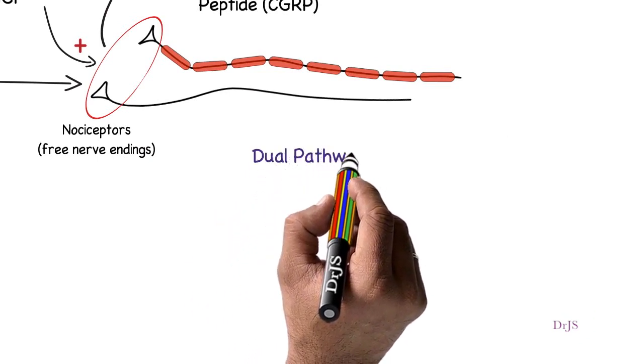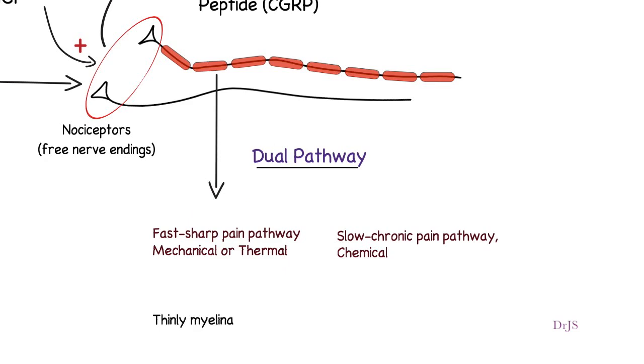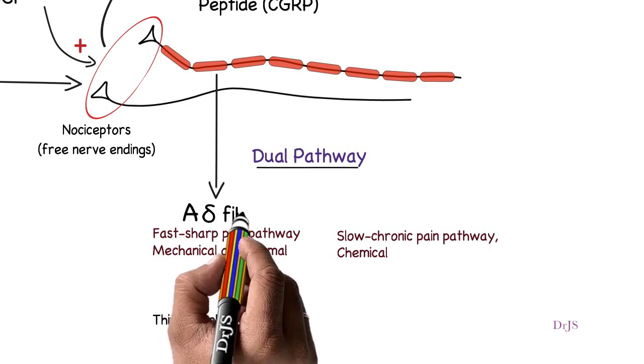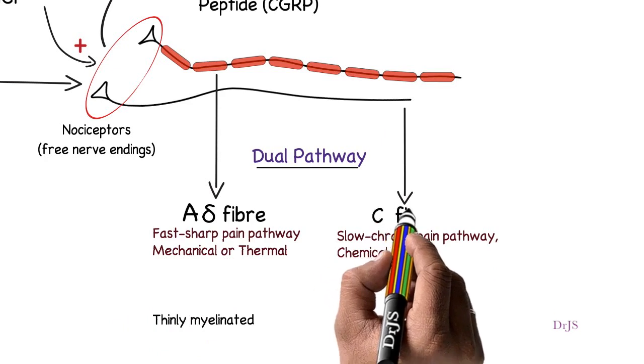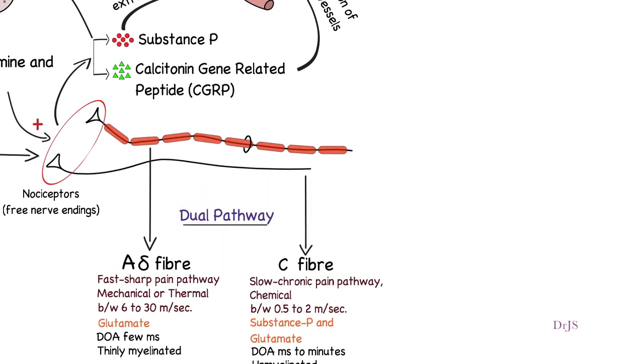These free nerve endings use two separate pathways for transmitting pain signals into the central nervous system. Mechanical and thermal sensations are carried by the fast sharp pain pathway, which contains thinly myelinated A-delta fibers with conduction speed of 6 to 30 meters per second. Chemical signals are carried by the slow chronic pain pathway, containing unmyelinated C fibers with conduction speed of 0.5 to 2 meters per second. The A-delta fibers release glutamate with duration of action of few milliseconds. The C fibers release substance P and glutamate with duration of action of milliseconds to minutes.